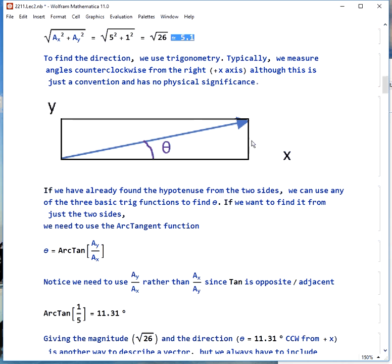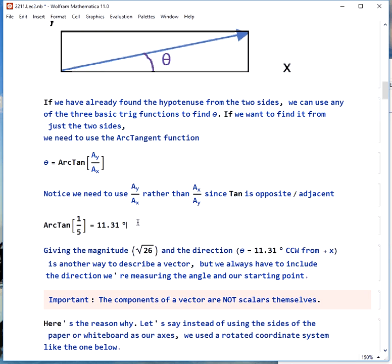If we go back to this to find the angle, and we use the arc tangent, it would be opposite, which is y, over adjacent, which is x. And if we do that, we'll get 11.31 degrees.